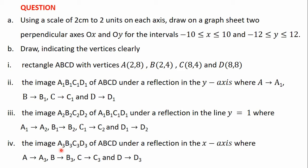Part IV: the image A3, B3, C3, D3 of ABCD under a reflection in the X axis, where A maps to A3, B maps to B3, C maps to C3, and D maps to D3. So this is the question for us to solve.